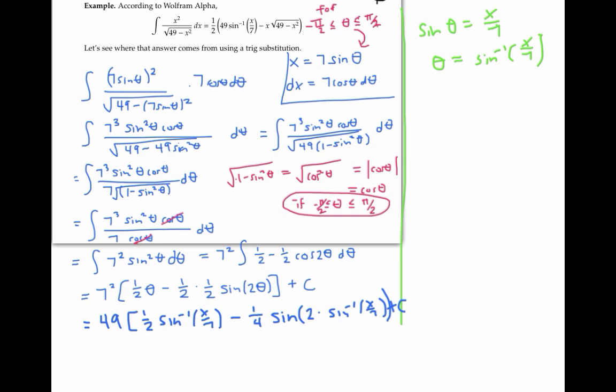But it's very awkward looking, sine of twice sine inverse x over seven. There's got to be a way to simplify this.